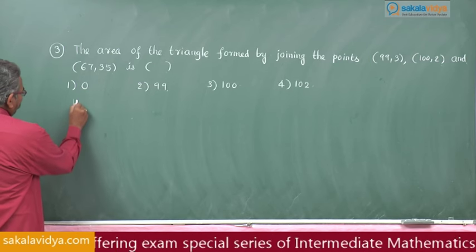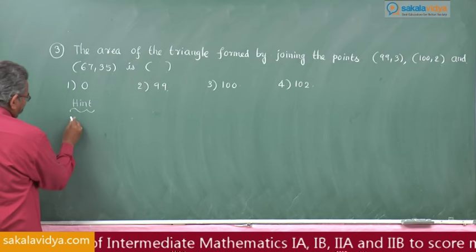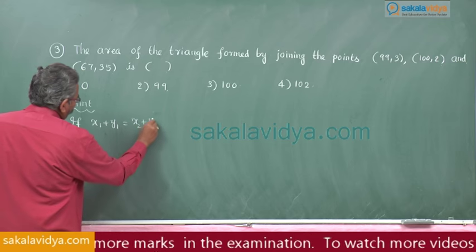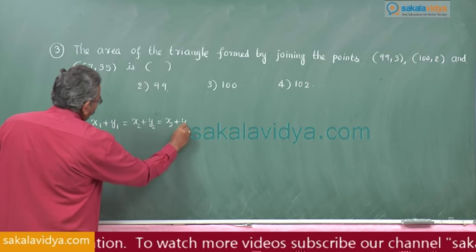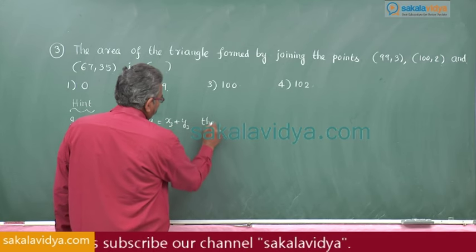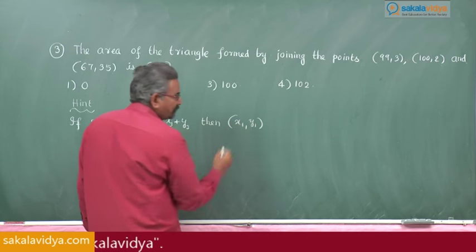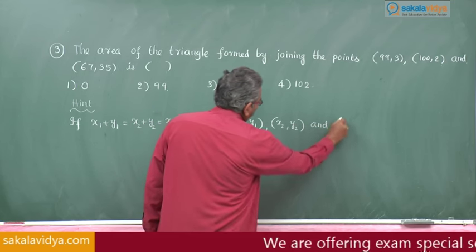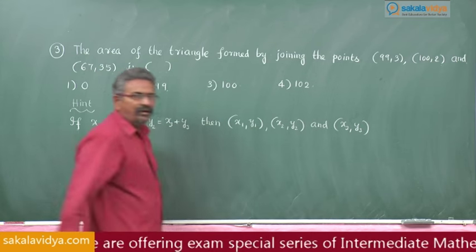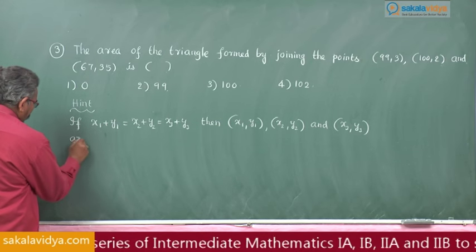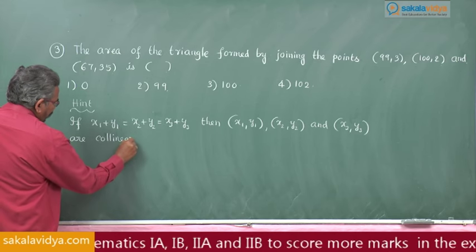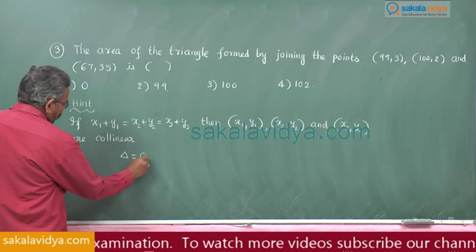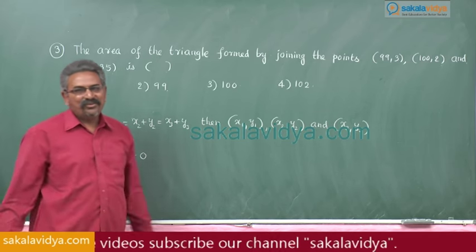Take this hint: if x1 plus y1 equals x2 plus y2 equals x3 plus y3, then x1,y1 and x2,y2 and x3,y3 are collinear. This is the technique — the given points are collinear. If the given points are collinear, delta equals 0. So the answer is 0, first option. Very simple.